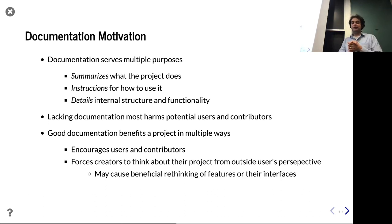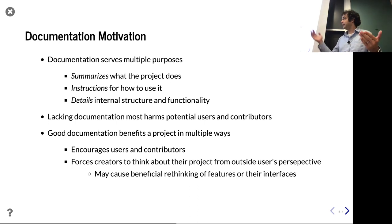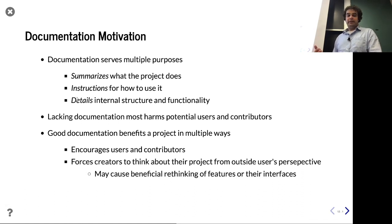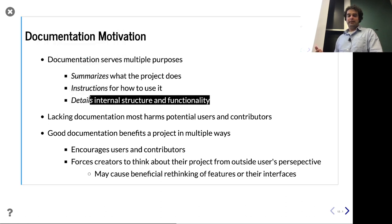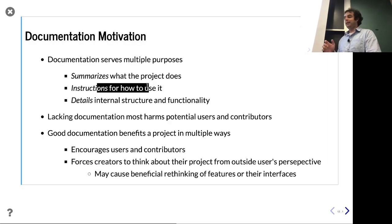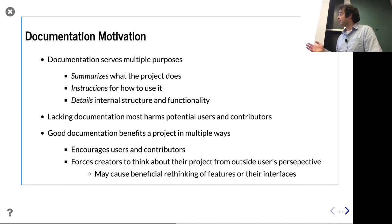After someone understands what your thing does at a high level, they might want to know how to use it — here are instructions: clone this, change directory, run make, etc. That's the next level. And then finally there are the details — the actual internals, what it specifically can and can't do, the nuances. Most folks struggle with motivation to write documentation because they're thinking of this third one. But that third point is actually used by a minority of your users. There are many people who would be really happy if you got the first two points right.